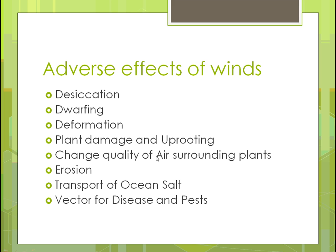We're going to look at some of the positive and negative impacts of wind in an agroecosystem. Some adverse effects include desiccation — that's tearing a plant apart, where the wind just rips it apart. There's also dwarfing, where because there's so much wind the plant can't keep growing and gets bent over. And deformation, which occurs because when the plant is trying to build new cells, it can't do that, so it ends up either deformed or dwarfed.